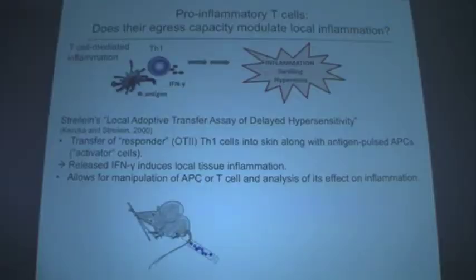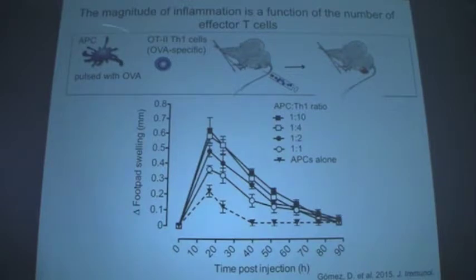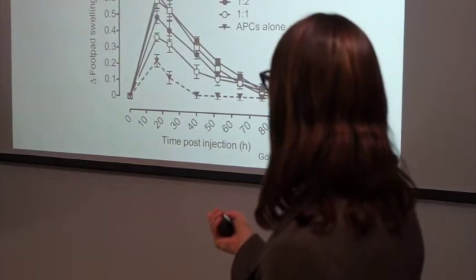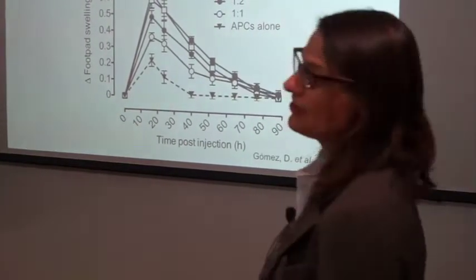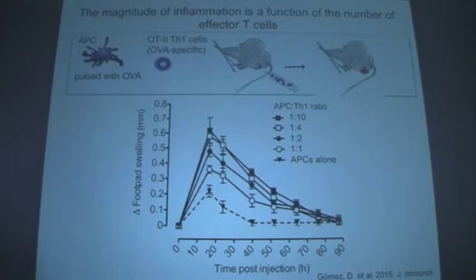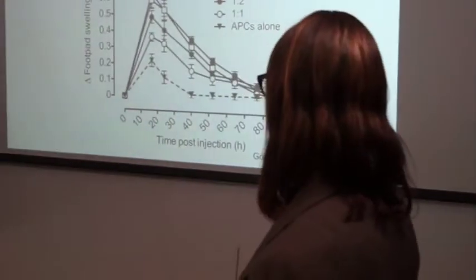In this model, TCR transgenic Th1 cells are injected into the skin together with antigen-presenting cells and antigen, mimicking what happens in vivo. Interferon-gamma produced by these Th1 cells induces localized tissue inflammation that can be assayed by measuring swelling. Streilein used this model to manipulate APCs; we use it to manipulate T cells. We inject cells into the foot pad or ear and measure inflammation. With APCs pulsed with ovalbumin and OT2 Th1 cells specific for ovalbumin, you get tissue swelling dependent on T cell numbers, while injecting APCs alone gives only mild, short-lived inflammation.